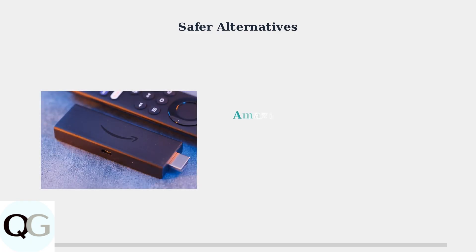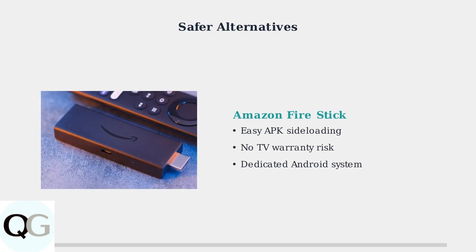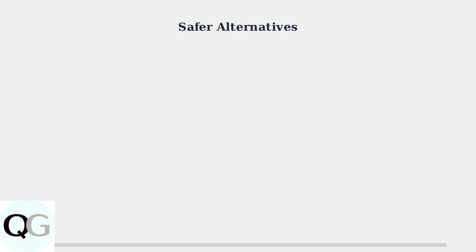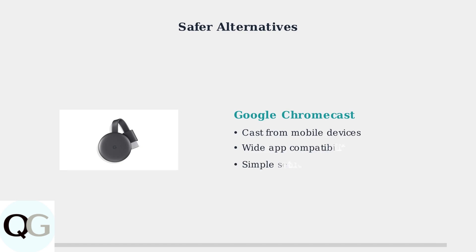The Amazon Fire Stick is a popular choice that plugs directly into your TV's HDMI port. It runs Android-based Fire OS, making it easy to sideload apps using APK files without affecting your TV's main system. Google Chromecast is another excellent alternative that allows you to cast apps from your smartphone or computer. While it doesn't support direct APK installation, it provides access to a wide range of streaming services.